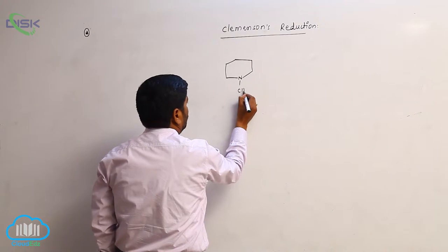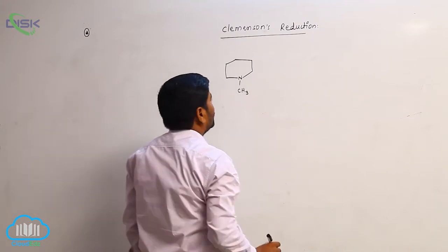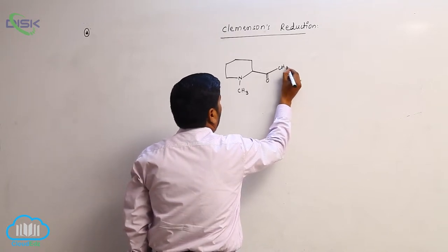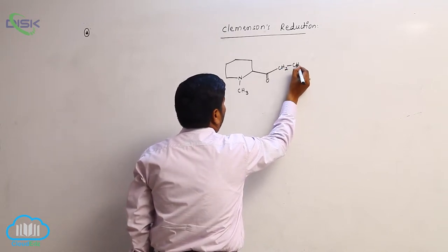This is methylpyridine. It has a double bond, OCH2, CH2, then here is CH3.